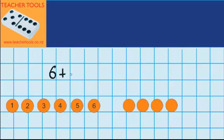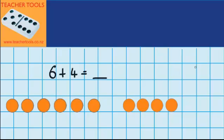6 plus 4 equals something. Now what I'm going to do is turn those six counters upside down. And now we're going to try and solve this question by counting on from the larger number.